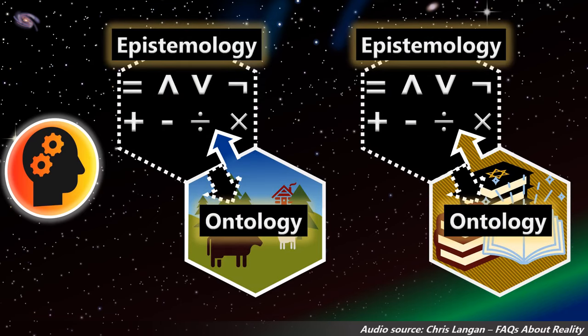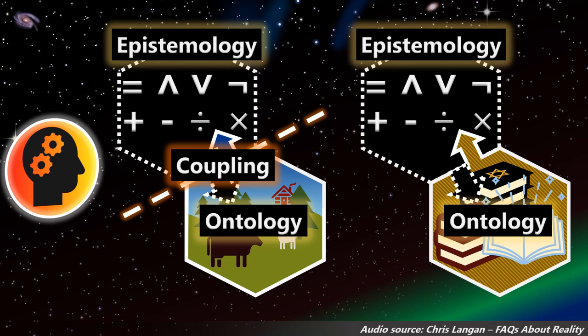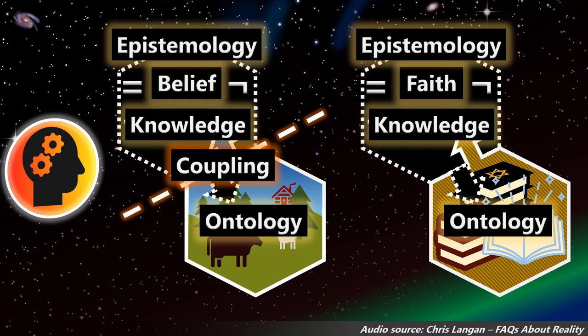Thus, like faith and knowledge, ontology and epistemology are linked by duality. Ontology is, of course, about being, and epistemology is about knowledge. And they're linked by a duality principle.